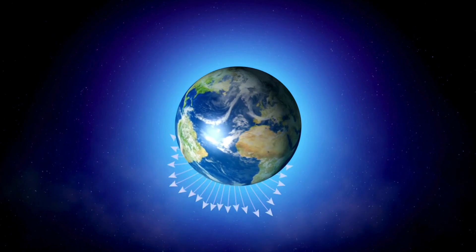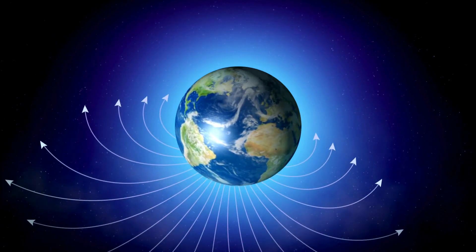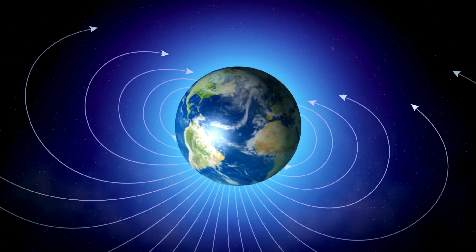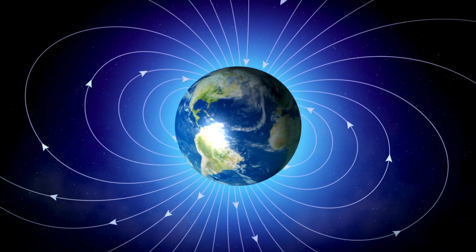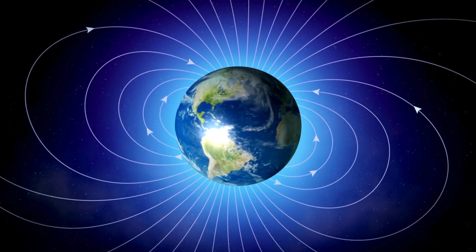But despite being weak, this magnetic field is vital. It extends far beyond our atmosphere, forming the magnetosphere, a protective bubble that shields Earth from harmful solar and cosmic radiation.